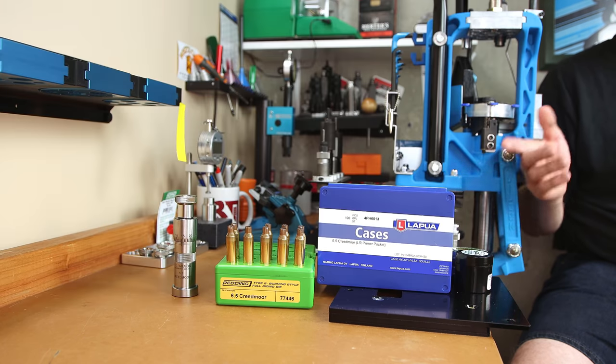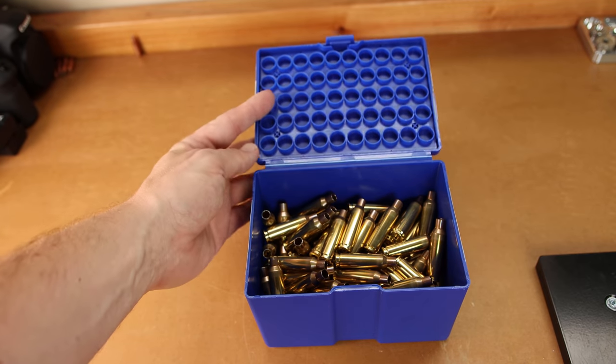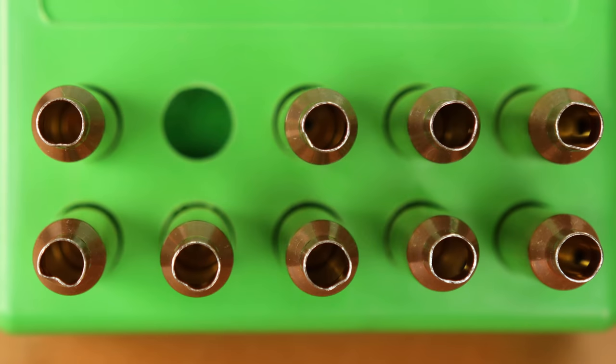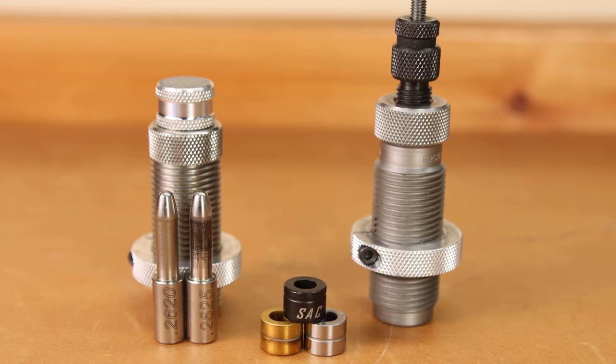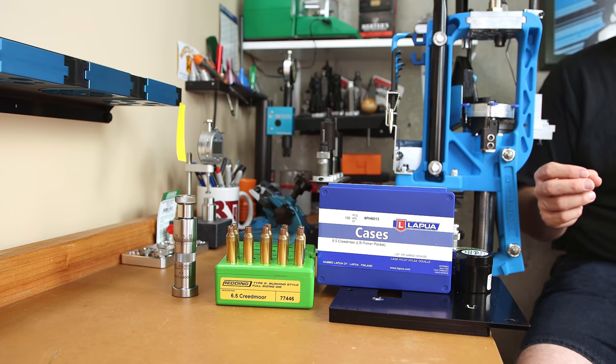If you've ever opened a box of new brass, you've seen this sight before: bent case necks. We know we have to straighten them out, but how exactly is the best way, and is it possible to achieve consistent neck tension across the lot on new brass, or do we have to wait for it to be fire formed first?